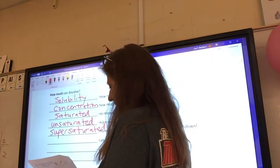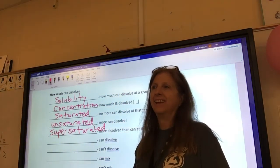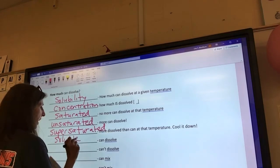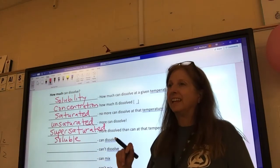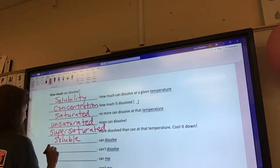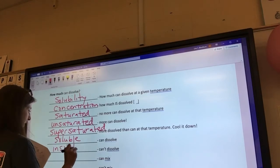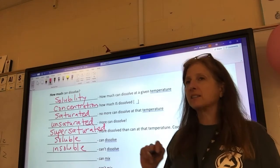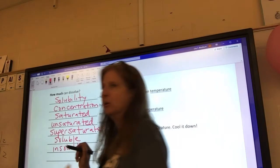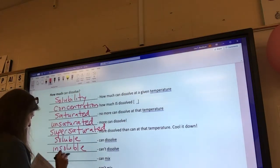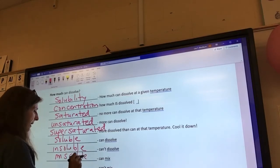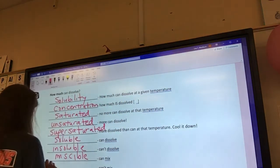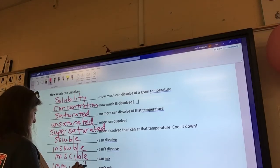The next one. If something can dissolve, what's it called? It starts with an S. Soluble. Yes. Y'all are going to be great on this. If it can't dissolve, it's called insoluble. Not insoluble, but insoluble. So, if things can mix, do you know what that's called? It's not called mixable. It's called miscible. If you can mix stuff, it is miscible. And if it cannot mix, it is not unmissable, but immiscible.